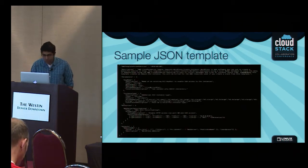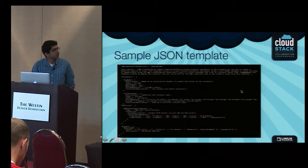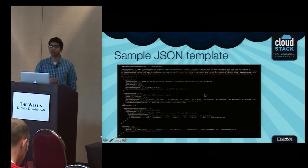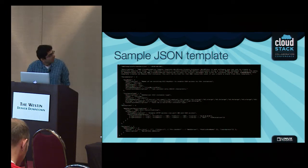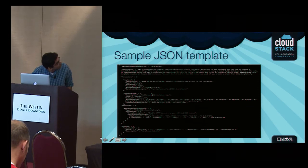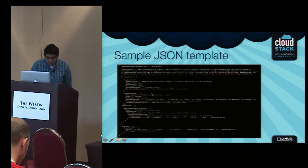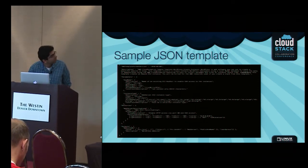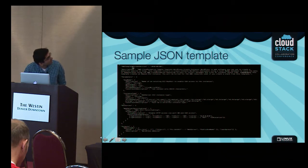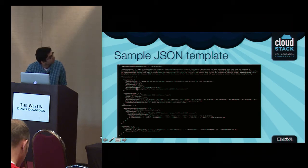This is how a typical Amazon CloudFormation template would look like. The whole JSON file which describes your application stack is termed a template. You have some kind of a versioning system, a quick description of what your application is doing, and this is where most of the interesting parts are.